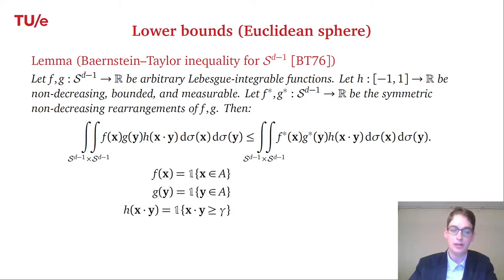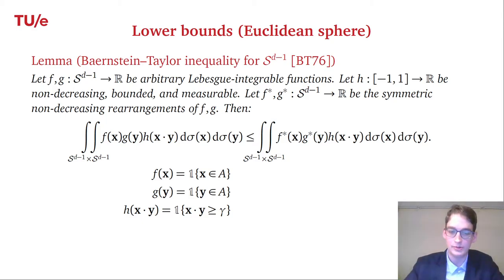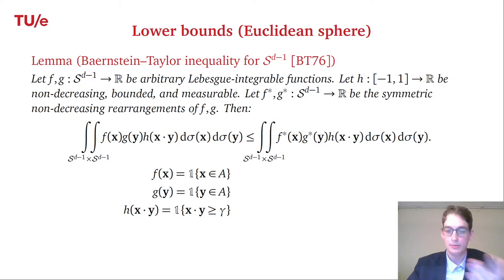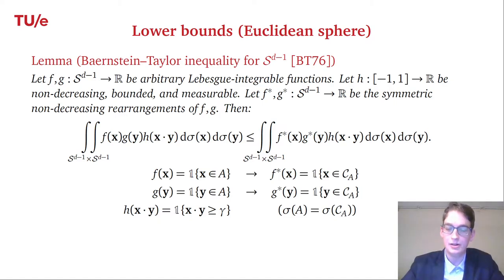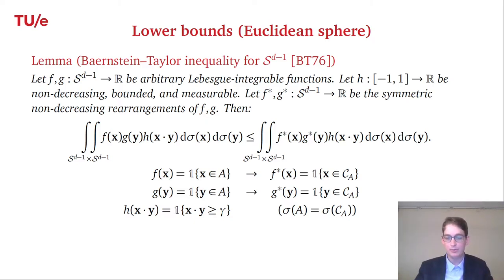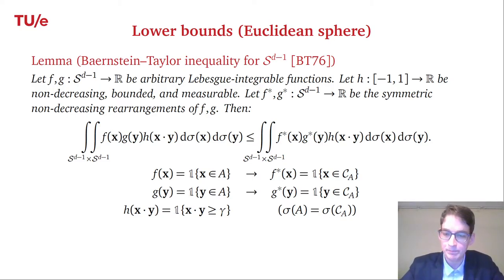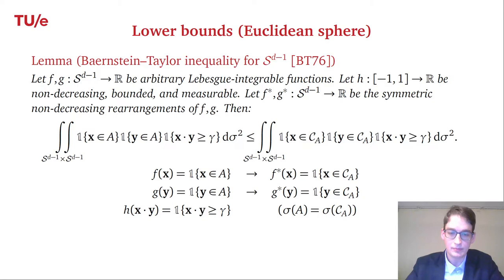We apply this for a specific choice of f, g, and h: f(x) is the indicator function of x being in some set A, g(y) is the indicator function of y being in A, and h is the indicator that the dot product x·y exceeds gamma. With these choices, the rearrangements f* and g* turn out to be indicator functions of x and y lying in C(A) — the spherical cap with the same volume as A.